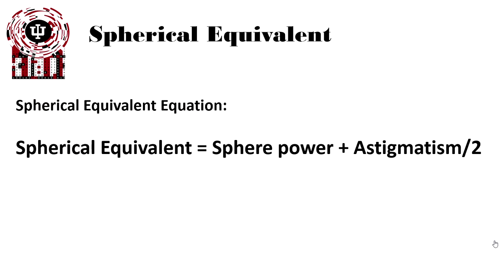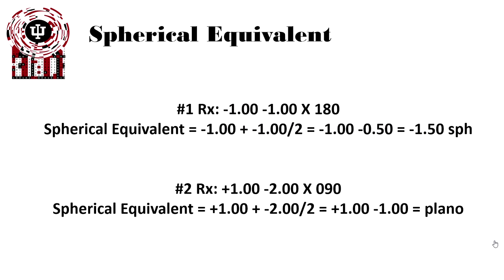How do we calculate the spherical equivalent? The spherical equivalent is simply calculated by adding the sphere power plus one half of the astigmatism power. Let's look at some examples. In this first example, we have a minus 1 minus 1 at 180. The spherical equivalent is minus 1 plus minus 1 divided by 2, or minus 1.50 sphere.